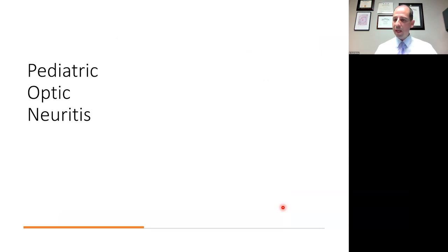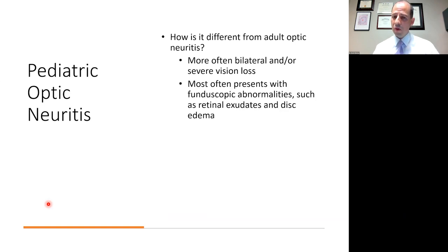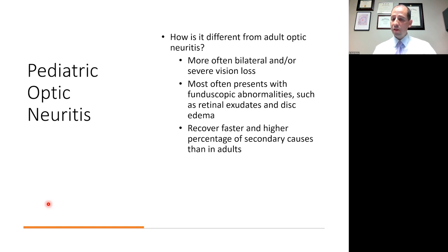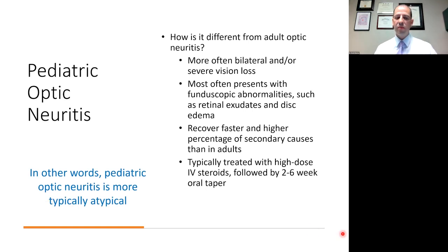In closing, some things about pediatric optic neuritis, which is slightly different from adult optic neuritis. Vision loss is more often bilateral and more often severe than in adults. Kids more often present with fundoscopic abnormalities, such as retinal exudates or disc edema. They also recover faster and have a higher percentage of secondary causes — not always idiopathic — than in adults. Treatment is a little different: kids are often treated with high-dose IV steroids followed by a longer oral steroid taper. Some people think there may be an increased risk of recurrence for these kids, which has been the justification for a longer oral taper. In other words, pediatric optic neuritis is more typically atypical, and kids can certainly get disorders like anti-MOG optic neuritis as well.